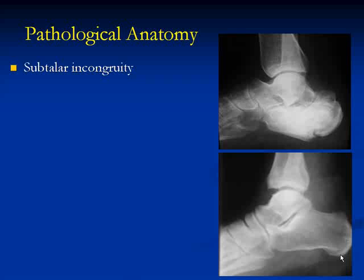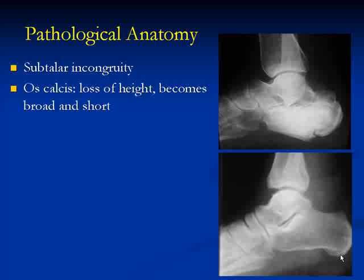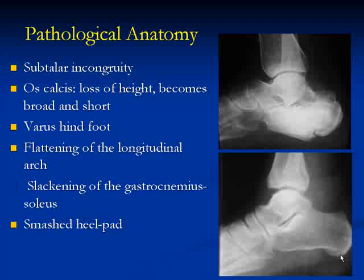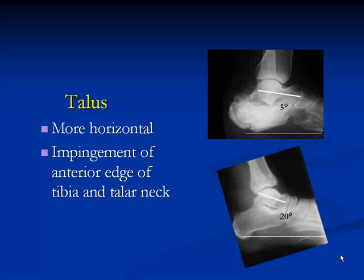The pathoanatomy of neglected cases includes subtalar incongruity with a greatly deformed calcaneus and a completely incongruent articular surface. There is loss of height of the os calcis; it becomes broad side-to-side and short. There is varus hindfoot, flattening of the longitudinal arch, slackening of the gastrocnemius-soleus complex, and a smashed heel fat pad. The talus becomes more horizontal, leading to impingement.